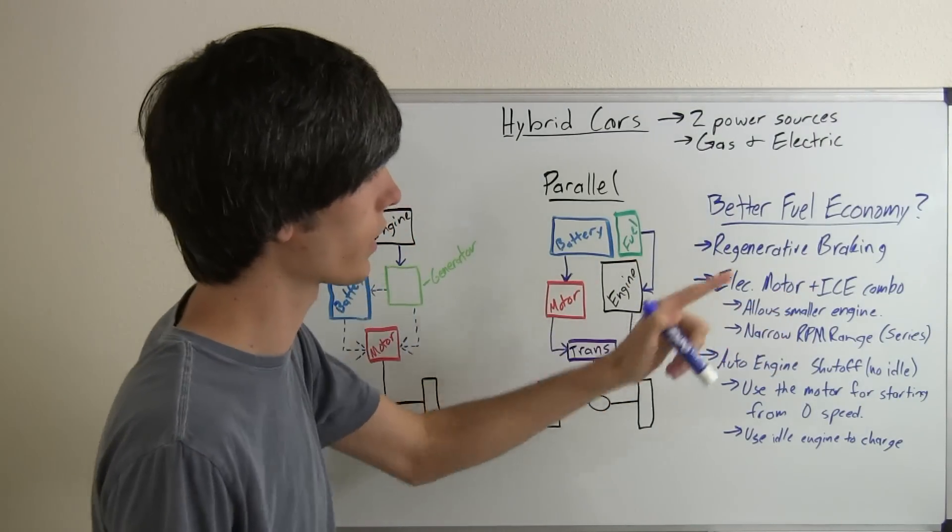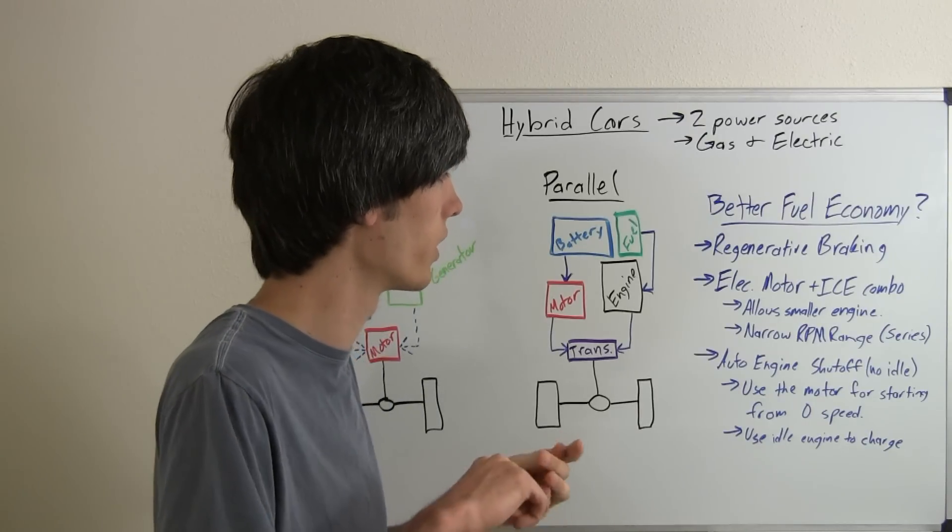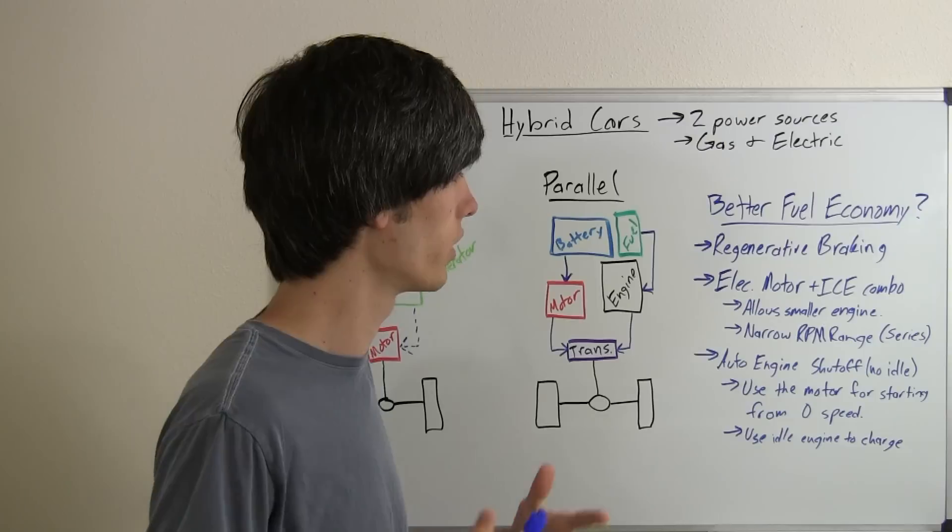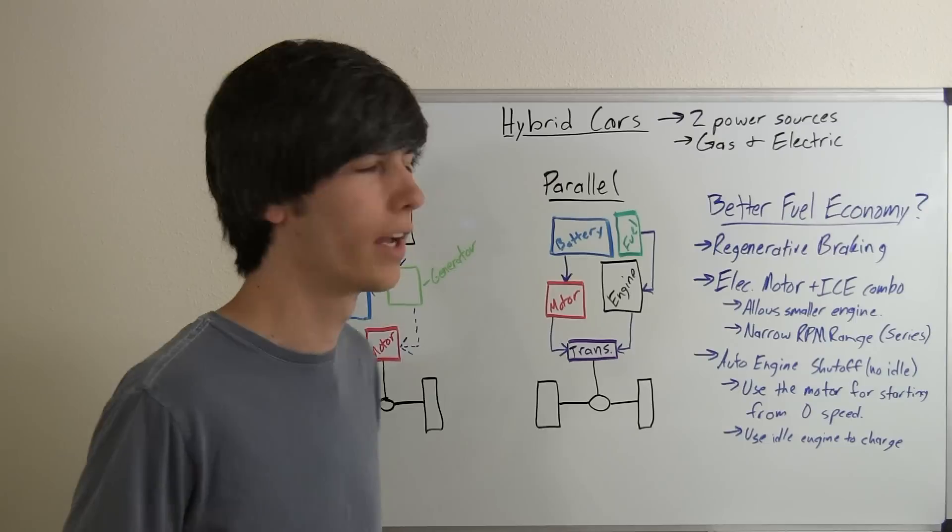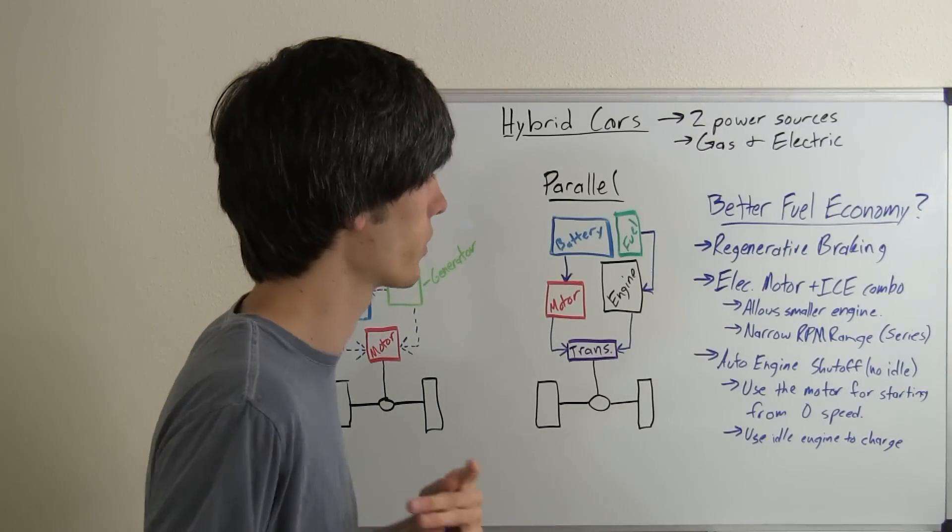Also, using an electric motor plus an ICE, or internal combustion engine, that allows you to use a smaller engine. So that smaller engine can be a more efficient engine using less fuel, since you're going to use electric power. And electric motors are far more efficient than internal combustion engines.